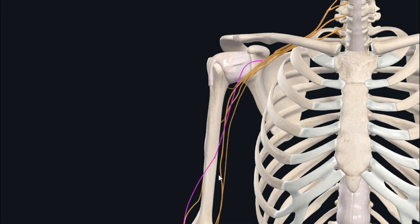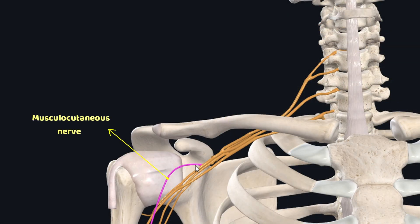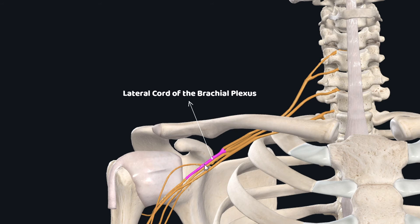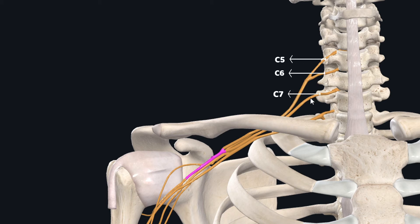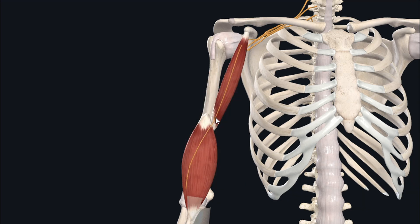Regarding the nerve supply of the biceps brachii, this muscle is supplied by the musculocutaneous nerve. The musculocutaneous nerve originates from the lateral cord of the brachial plexus, which is made up of the anterior rami of the C5, C6, and C7 cervical nerve roots. This nerve passes deep to the biceps brachii and just above the coracobrachialis and brachialis muscles to innervate the biceps brachii.